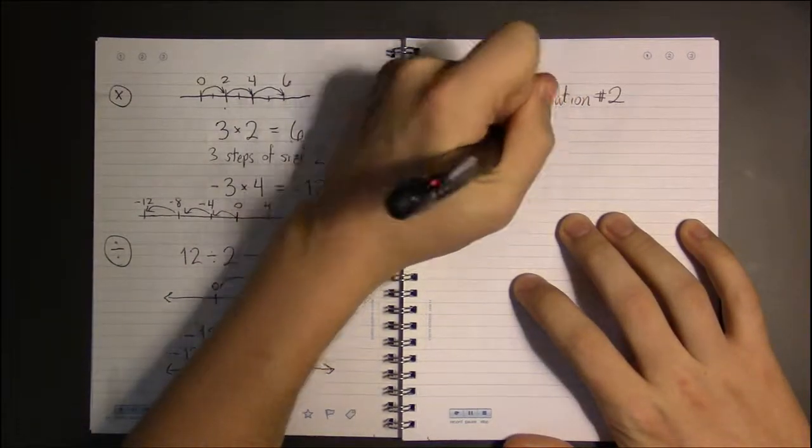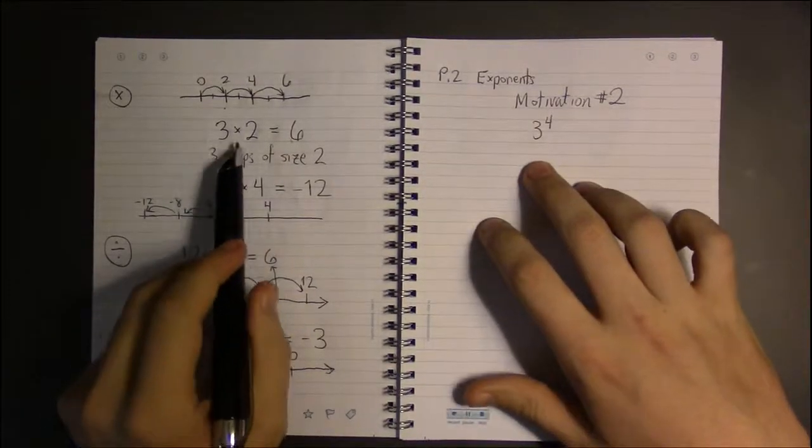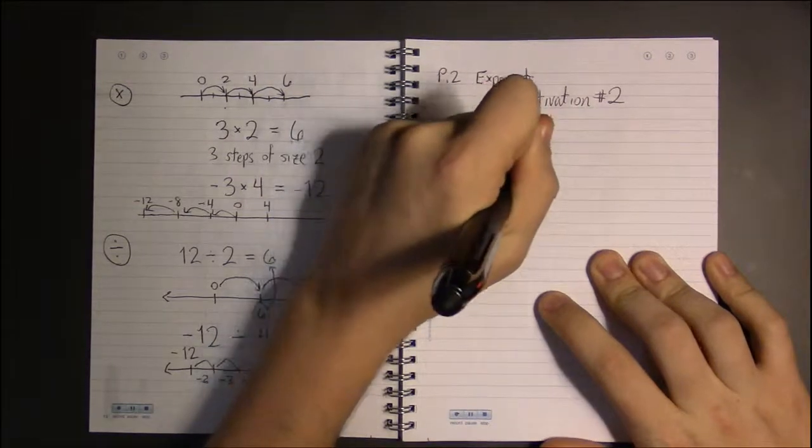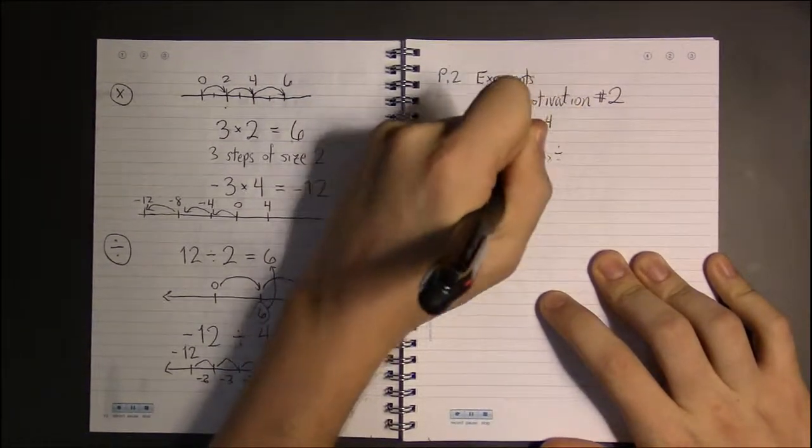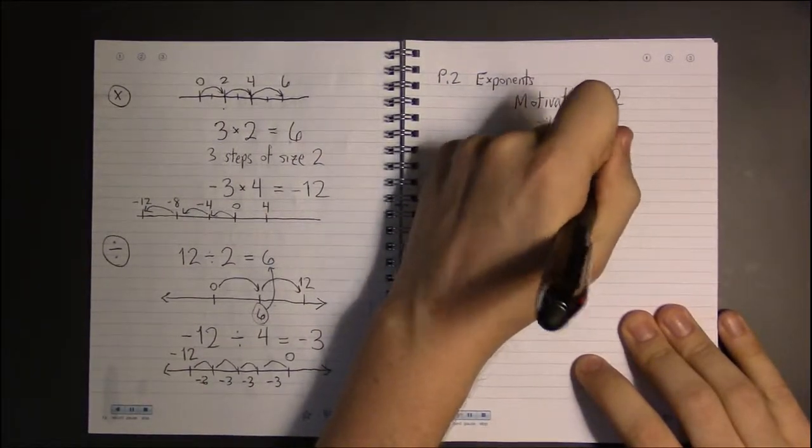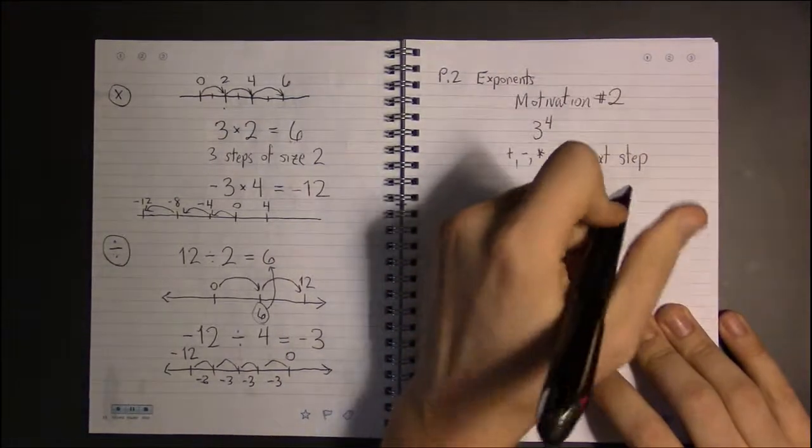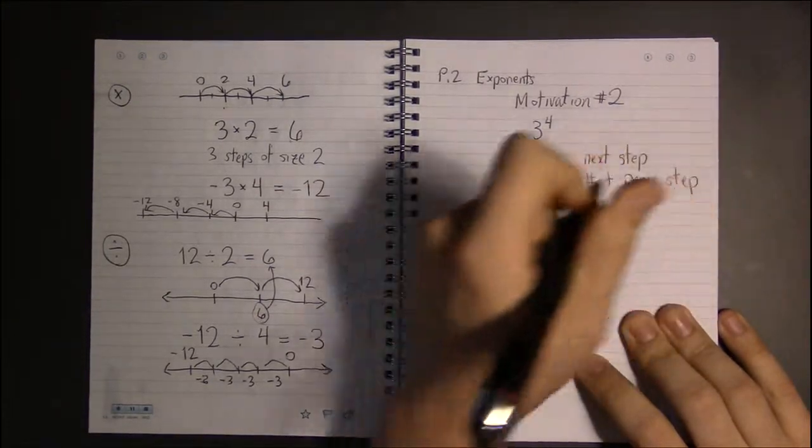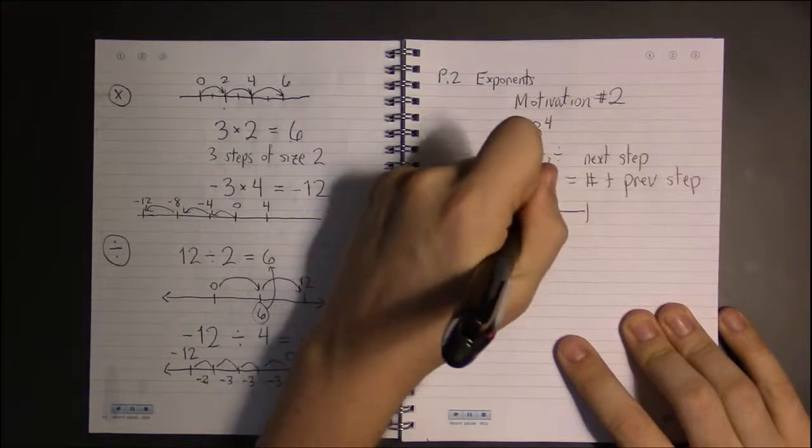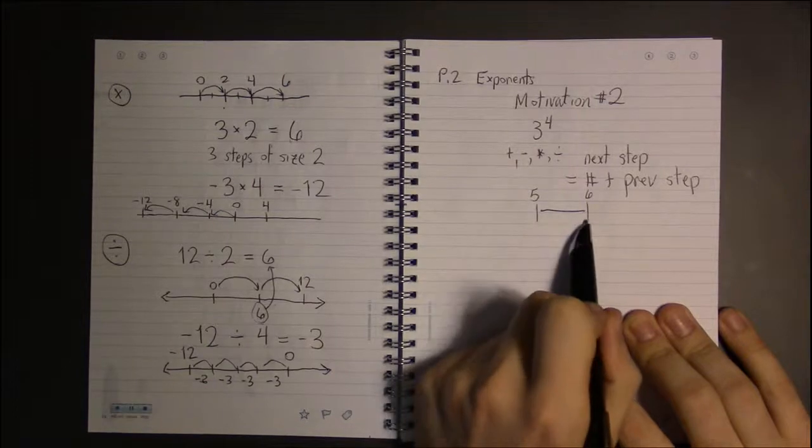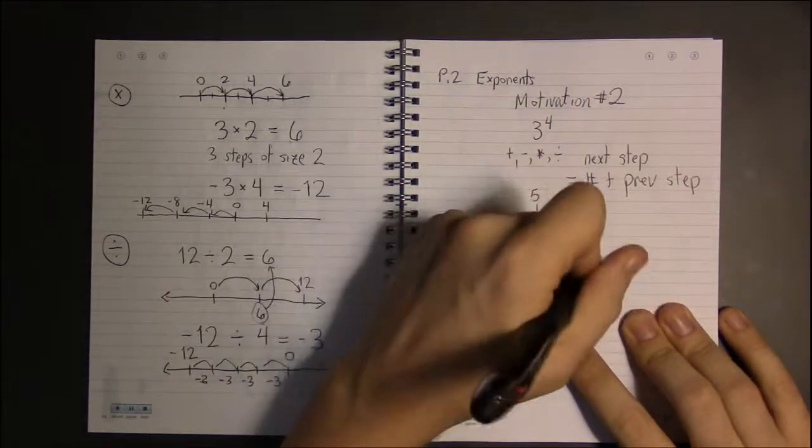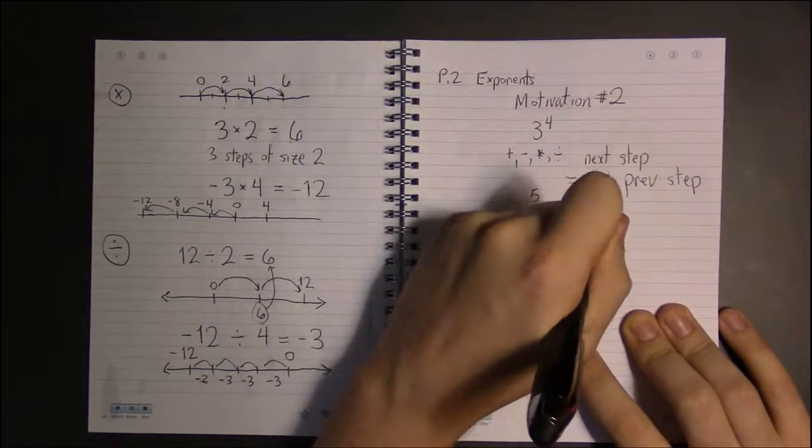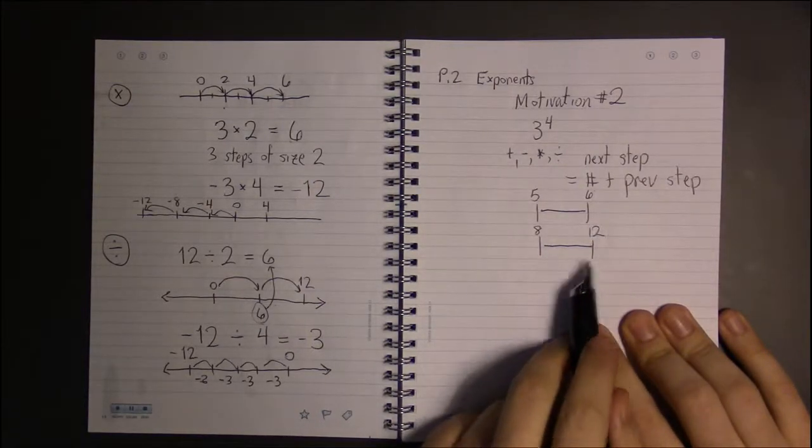Now we're going to look at how do we view exponents in a similar style. Well, before, with addition, subtraction, multiplication, and division, the next step was always some number plus the previous step or the previous value. So if we were doing steps of one, going from five to six, our next step is just one more than our current step. Or we could be doing multiplication, multiplying by fours, going from eight to twelve. So our next step is four more than our current step.